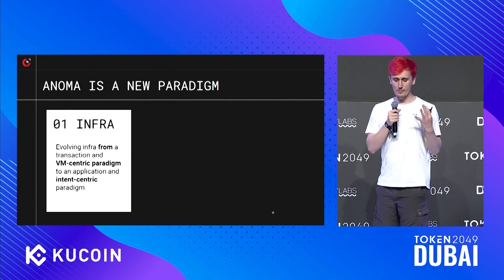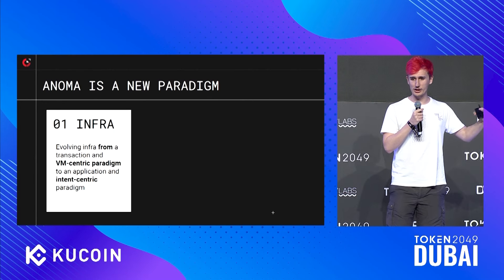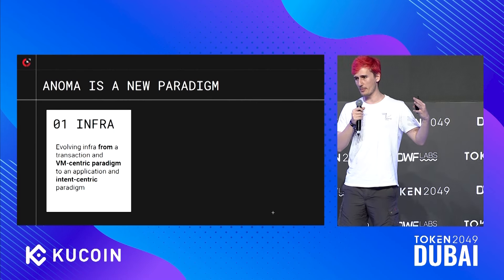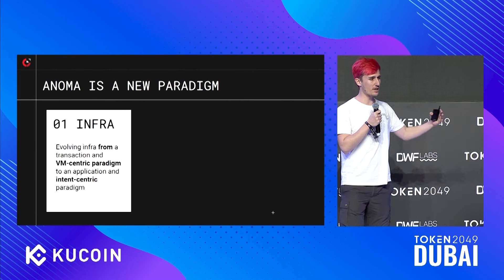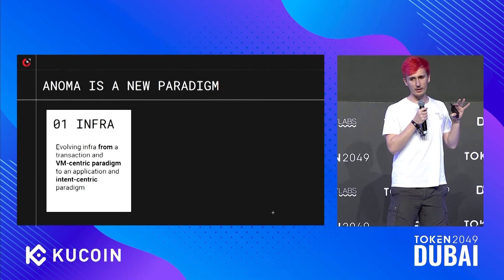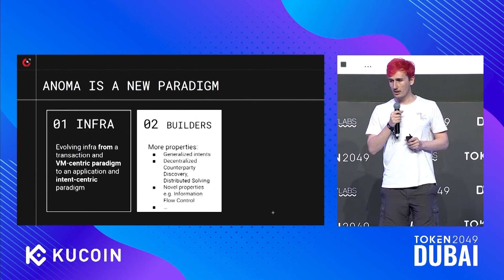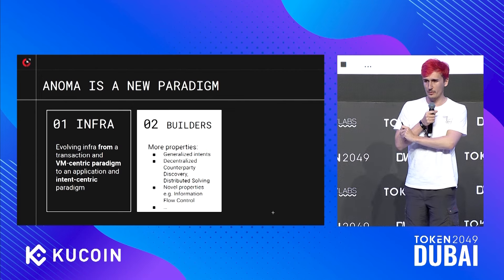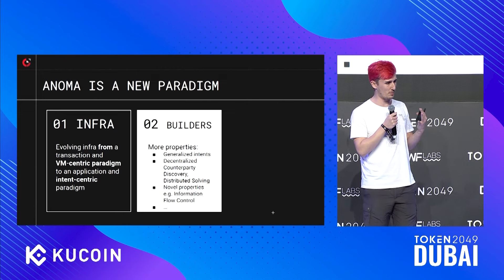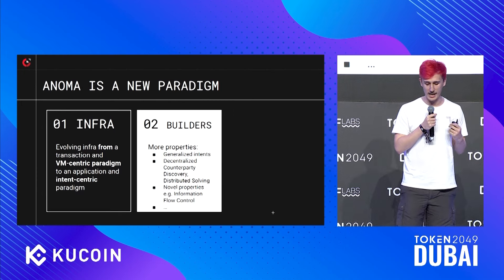Anoma fundamentally is a new paradigm. We're evolving the infrastructure — moving away from transaction and virtual machine-centric design towards an intent-centric paradigm, where applications, developers, and users can leverage intents rather than transactions under the hood. Building good execution environments for an intent machine really matters. With Anoma, you get fully generalized intents, plus decentralized counterpart discovery and distributed solving — a lot of these things come for free out of a properly designed intent machine architecture.